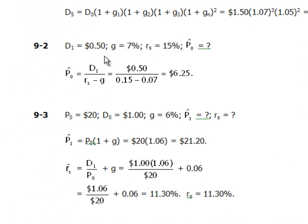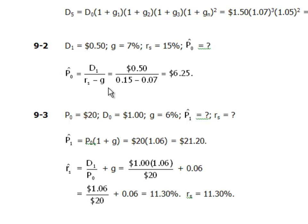The solution is pretty straightforward. D1 = $0.50, the growth rate g = 7%, and the required rate of return rs = 15%. The stock price at time zero is equal to the dividend at time one divided by (rs minus g). Before applying this model, you must make sure the company is growing constantly — at a particular growth rate indefinitely.